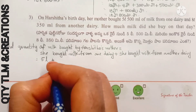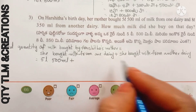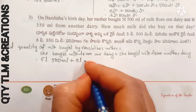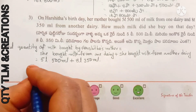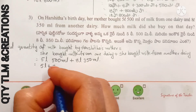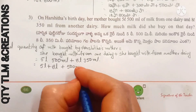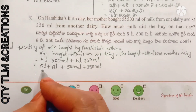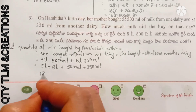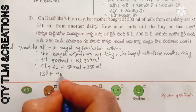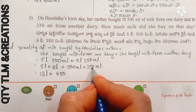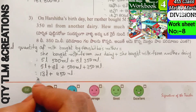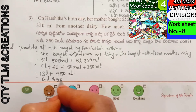5 liters 400 milliliters plus she bought milk from another dairy equal to 8 liters 350 milliliters. Adding liters from liters and milliliters from milliliters: 5 liters plus 8 liters plus 400 milliliters plus 350 milliliters equals 13 liters plus 850 milliliters, equal to 13 liters 850 milliliters.